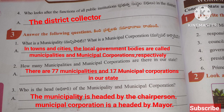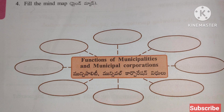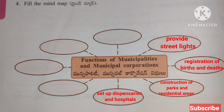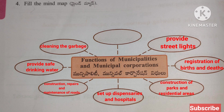Who is the head of the Municipality and Municipal Corporation? The Municipality is headed by the Chairperson. The Municipal Corporation is headed by the Mayor. Mind map — functions of Municipalities and Municipal Corporations: provide street lights, registration of births and deaths, construction of parks and residential areas, set up dispensaries and hospitals, construction, repairs and maintenance of roads, provide safe drinking water, cleaning garbage and disposal of waste.